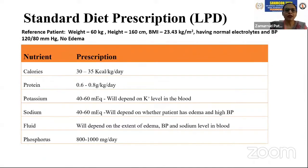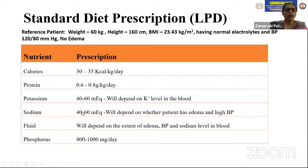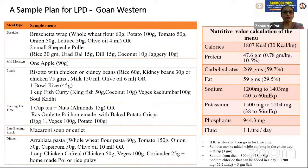All these regional diets will provide a calorie intake of 30 to 35 kilocalories, with proteins calculated at 0.6 to 0.8 grams. Sodium and potassium will be within the range of 40 to 60 milliequivalents, fluid intake normal, and phosphorus between 800 to 1000 milligrams. I now request the first team member to highlight the Goan cuisine.